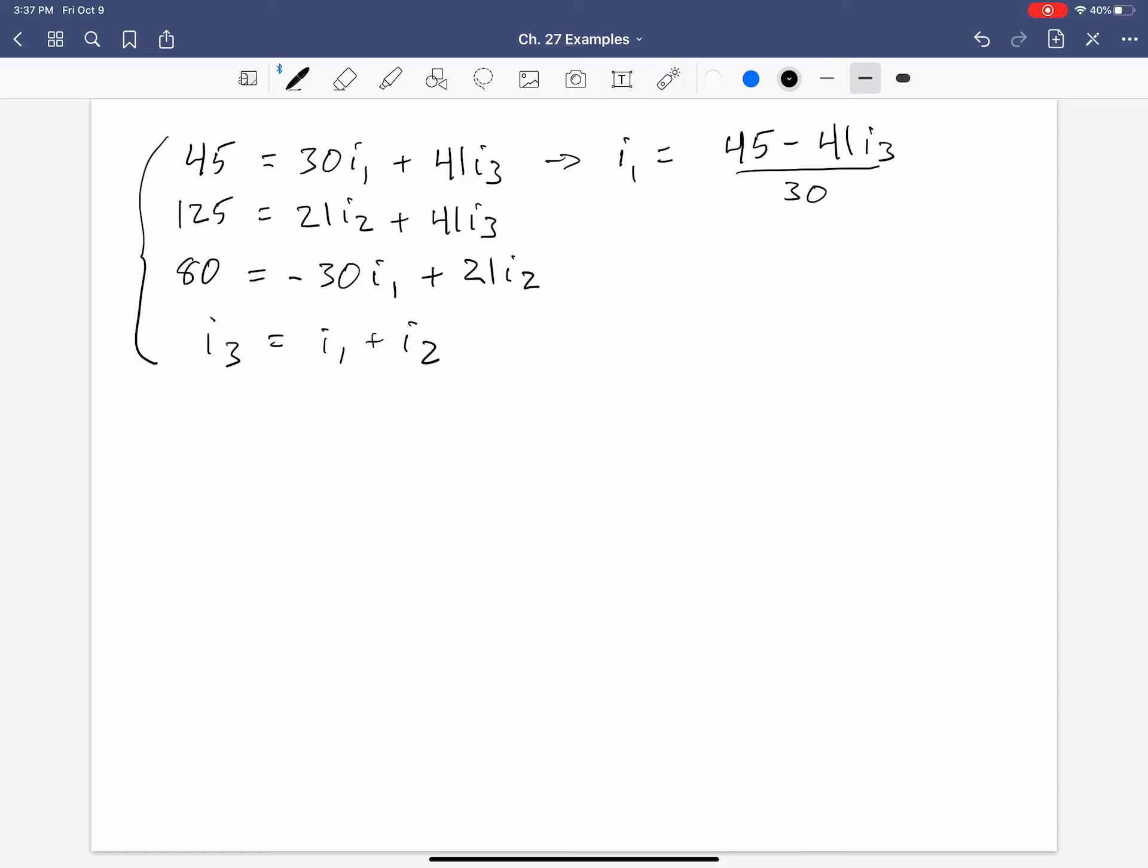And I'm going to solve equation 2 here for I2. Because I'll plug that expression in for I2 down here and it will be in terms of I3. So, I2 equals 125 minus 41 I3 all over 21. And so, now I'm going to take these expressions. Take I1, plug in right there. Take I2, plug it in there.